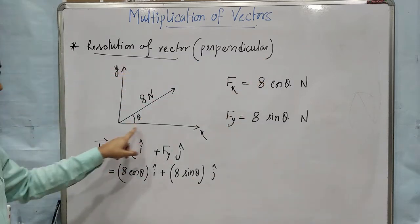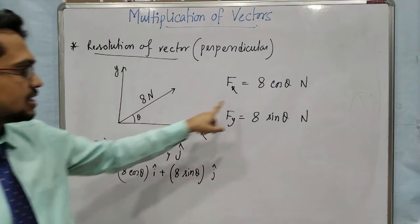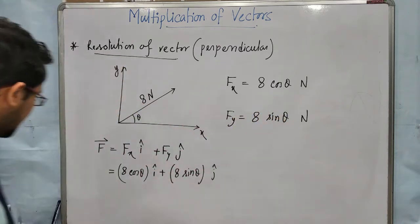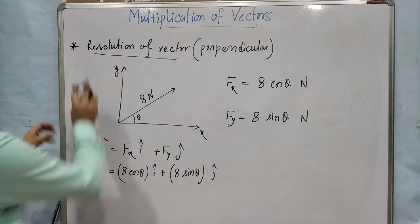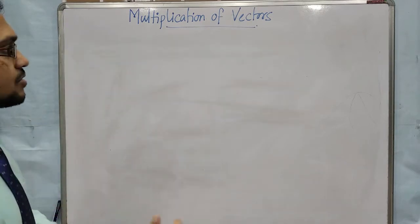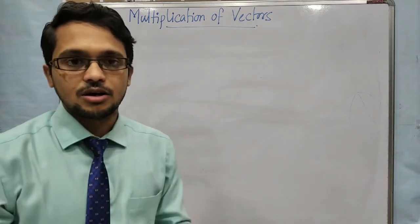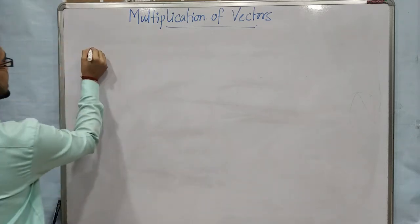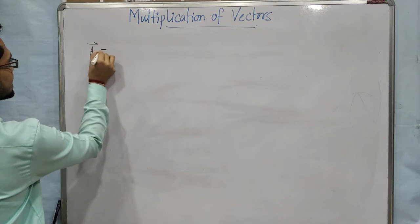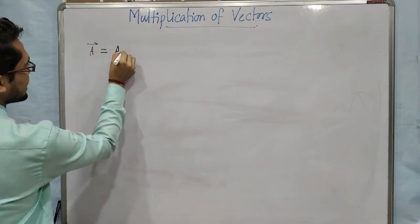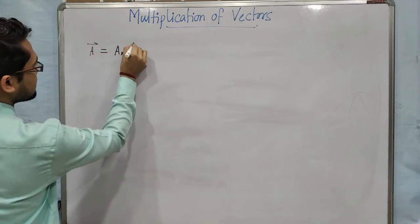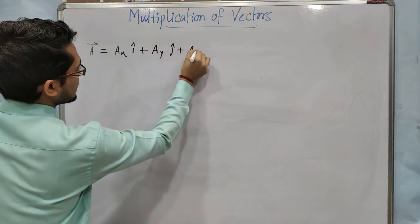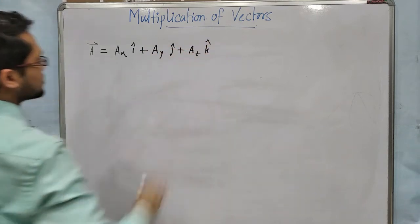With which axis the angle is given, that component will be cos. And the perpendicular component will be sin. Now come to the representation of a vector using unit vectors. Any vector A can be represented as AX i-cap plus AY j-cap plus AZ k-cap.